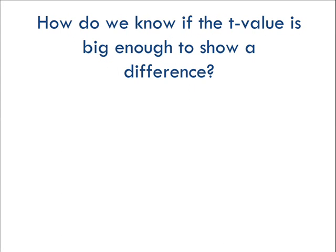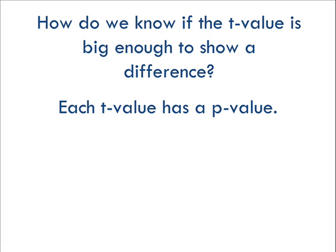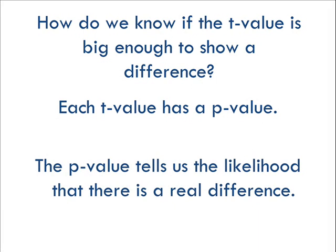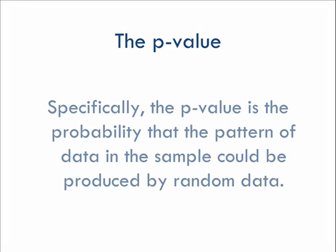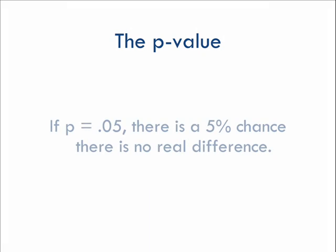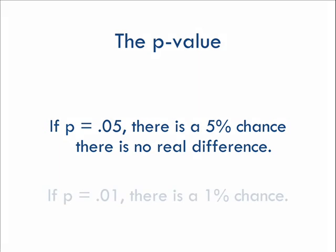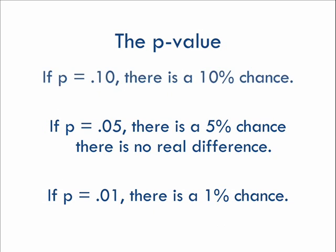But how do we know if it's big enough? Each t-value has a corresponding p-value. The p-value is the probability that the pattern produced by our data could be produced by random data — in other words, it tells us whether the difference between our groups is real, or if it's just a fluke. A p-value of 0.05 means there's only a 5% chance we would get these results with random data. A p-value of 0.01 means there's only a 1% chance, while 0.1 means there's a 10% chance. In most research, the cutoff for what we consider reliable, or statistically significant, is a p-value of 0.05 or below.